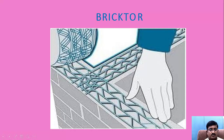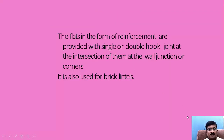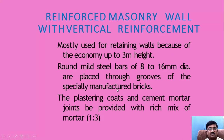The Brickter reinforcement is interlaced — the outer lines are thicker than the inner ones. This is also one of the reinforcements popular in this kind of masonry. The plates in the form of reinforcement are provided with single or double hook joints at the intersection at wall junctions or corners, and also used for brick lintels. Reinforced masonry wall with vertical reinforcement is mostly used for retaining walls — for economy up to 3 metre height. Round mild steel bars of 8 to 16 mm diameter are placed through grooves of specially manufactured bricks. Plastering coats and cement mortar joints are provided with a rich mix mortar of 1:3.